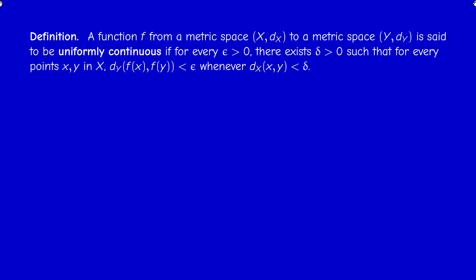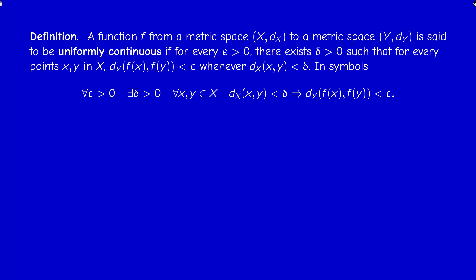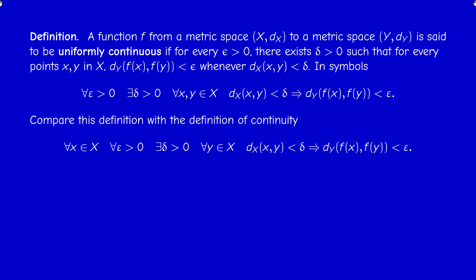We say that a function between two metric spaces X and Y is uniformly continuous if for every epsilon positive, we can find a positive number delta, such that whenever the distance between x and y is less than delta, then the distance between their images is less than epsilon. The order of the quantifiers is very important: delta depends on epsilon and x usually, but if delta depends only on epsilon and not on x, then we have uniform continuity — the same delta works for all x.